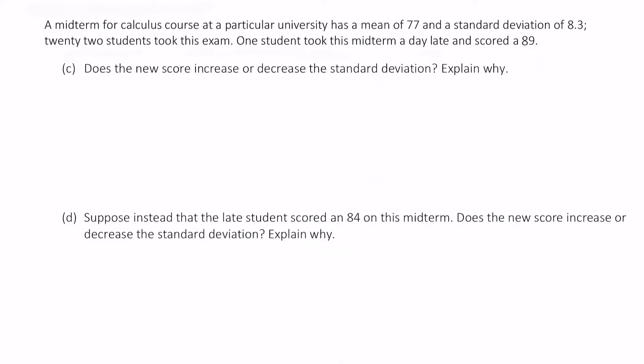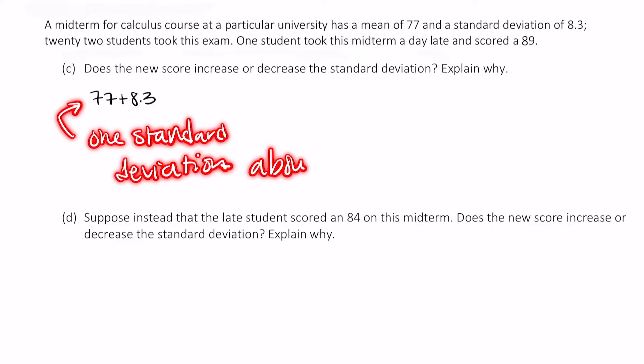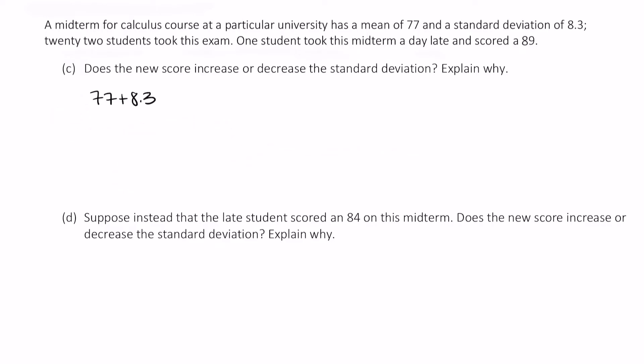So let's figure out 89, how far above the mean is it? Well, 77 plus 8.3, this is going to give us one standard deviation above the mean. So one standard deviation above the mean is 85.5. Notice that 89 is larger than this. So we know it's more than one standard deviation above the mean. Since it is more than one standard deviation above the mean, it is going to increase the standard deviation.